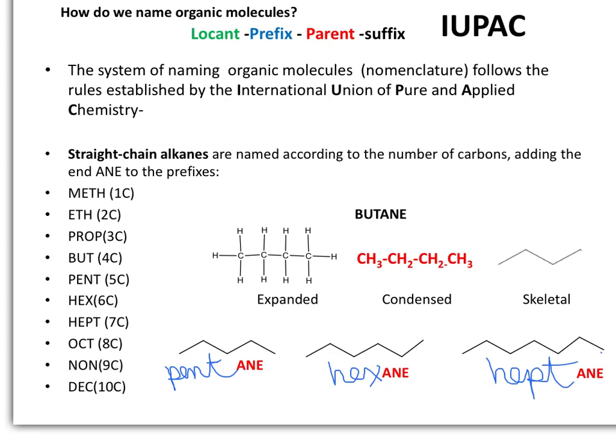Historically, organic compounds were named by the chemists who discovered them, and in other cases the names reflected the source of the compound. As the number of compounds discovered increased, and after synthesizing so many other compounds, historical names are no longer practical.